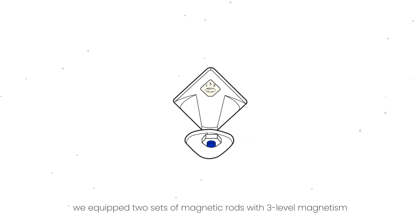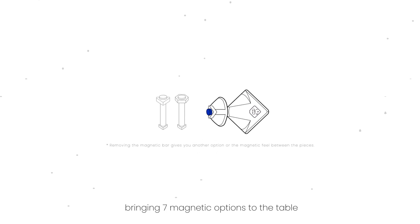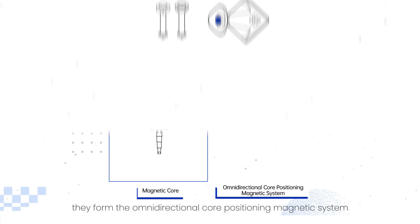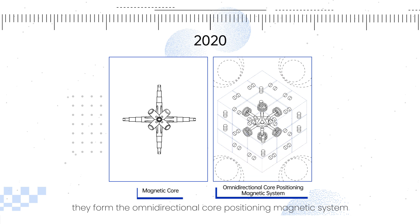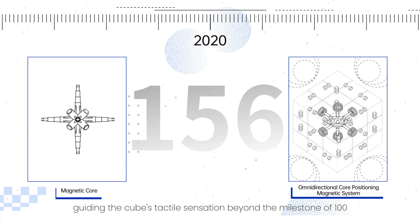Meanwhile, we equipped two sets of magnetic rods with three-level magnetism, bringing seven magnetic options to the table. Together, they formed the omnidirectional core positioning magnetic system in tandem with GES Pro, guiding the cube's tactile sensation beyond the milestone of 100, reaching a groundbreaking 168 variations.